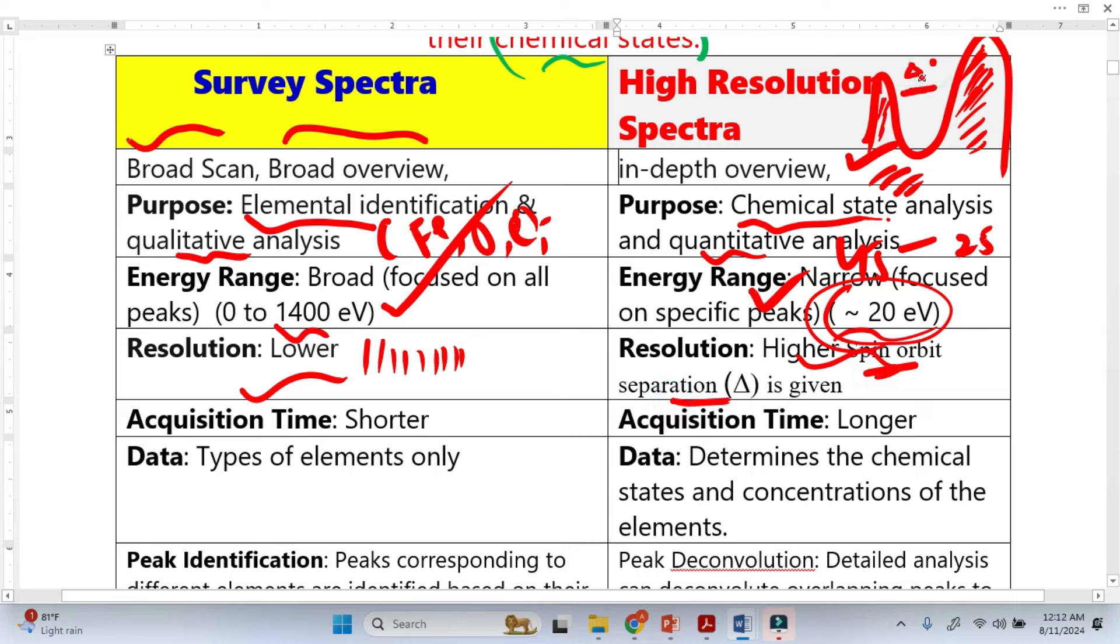The acquisition time is longer because we have to see the minor detail. Here the acquisition time is shorter because we are only looking for elements. We get the data in the form of elements here, and here we get the data in the form of chemical states.